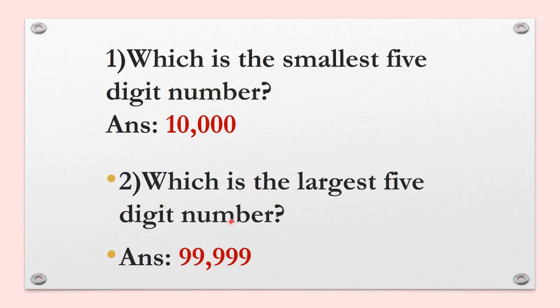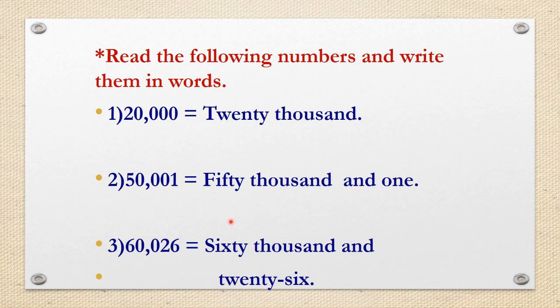First, which is the smallest 5-digit number? Answer: 10,000. Second, which is the largest 5-digit number? Answer: 99,999. Read the following numbers and write them in words: First, 20,000. Second, 50,001. Third, 60,026.